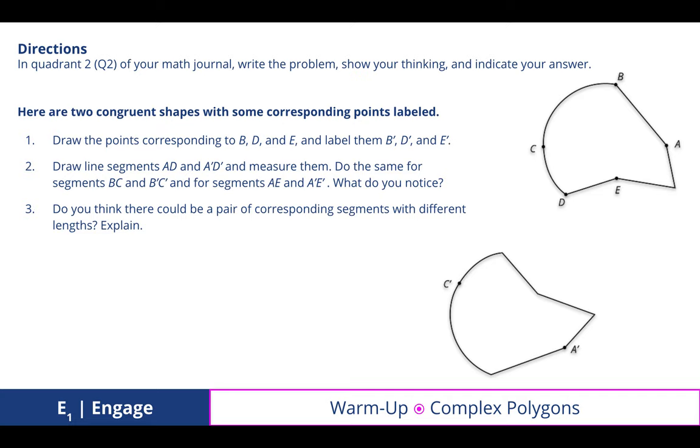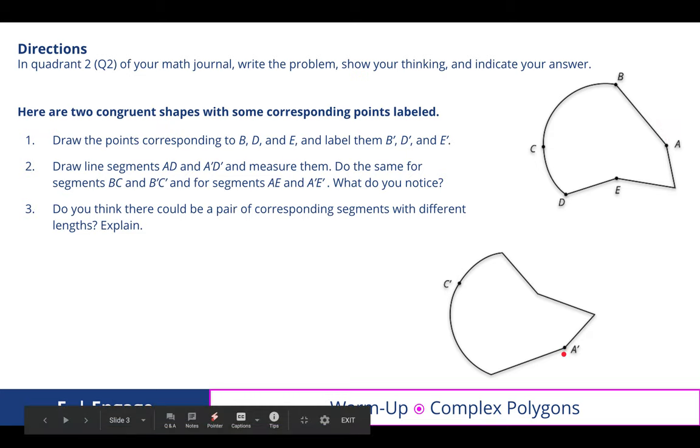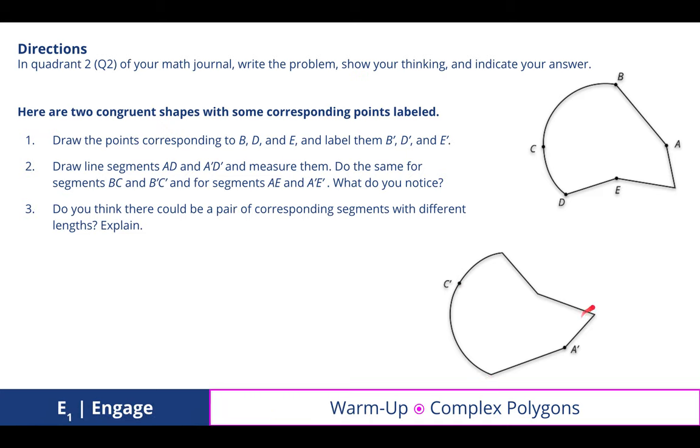We looked at these two complex polygons and wanted to make sure that we could draw the points corresponding to B, D, and E, and label them B', D', and E'. Using these letters, we noticed that they go around in order, and so we were able to use that logic to go around in order this way. So this would be B' down here to C, which is on the curve, and therefore we were able to recognize that this is a rotation and reflection of the original image here.